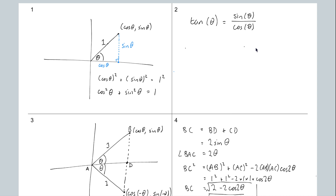Dividing everything through by 2 gives 2 sin squared theta equals 1 minus cos 2 theta. Rearranging so that cos 2 theta is on the left gives cos 2 theta equals 1 minus 2 sin squared theta. That's the identity for cos 2 theta. It's powerful because we've now got a double angle split into a single angle — so we can start with something like cos 120 and finish with sin 60, which is an angle we can work out.